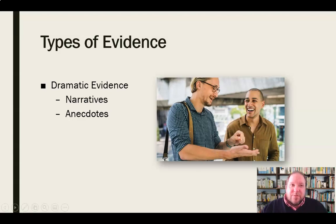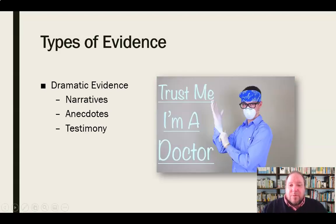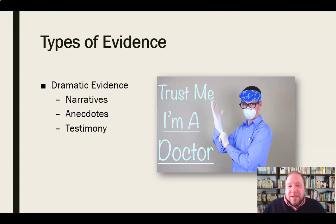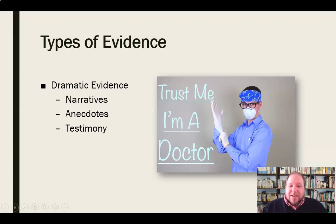We can provide dramatic evidence through narratives, but we can also do so through the use of testimony. When we have an expert in some arena, that would be expert testimony. When we have somebody who's experienced something firsthand, we call that peer testimony. Either way, that's dramatic evidence — somebody who has some special knowledge or expertise of that particular topic, who is telling us about that thing. It is compelling to hear it from people who know about it, either because they've studied it or because they've lived it.